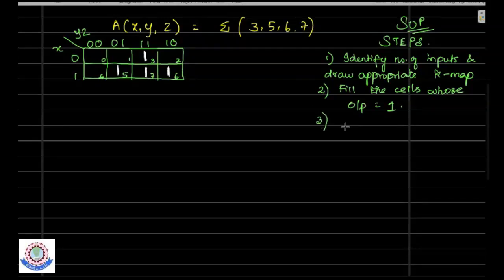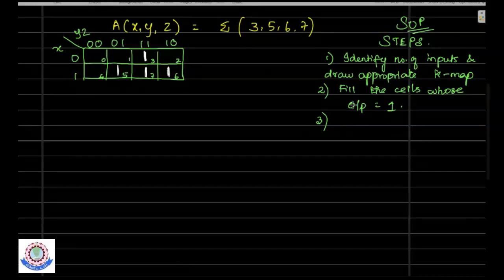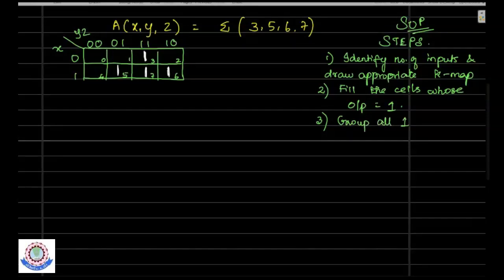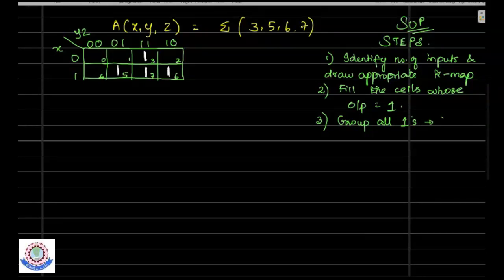Up to the 2nd step it is very easy. The 3rd step is a tricky step — you need to group all the ones. That is the third step: we need to group all the ones. The condition here is we have to form big groupings with a minimum number of groups.